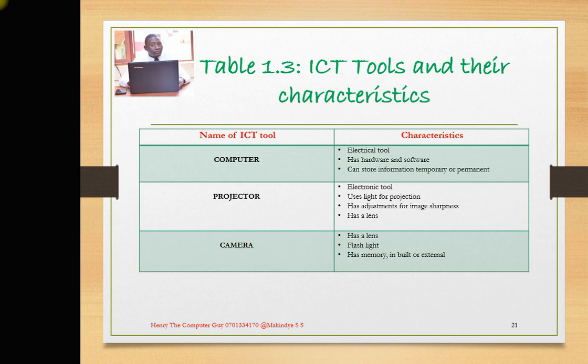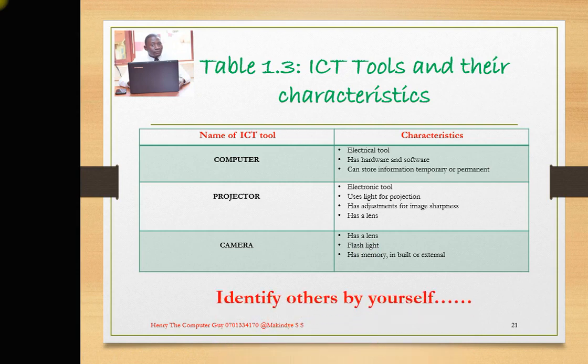The projector also has a lens that it uses to display the light. Lastly, we have a camera. A camera has a lens and uses light when taking pictures. It has memory either inbuilt or external — you can put a memory card in it. Thank you for watching, don't forget to subscribe — it's been Henry the computer guy, bye bye.